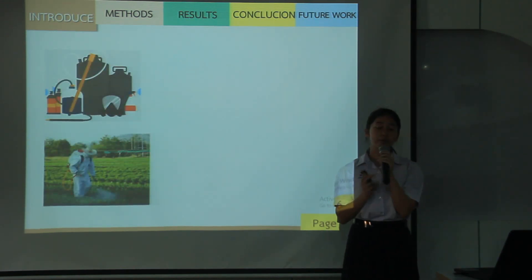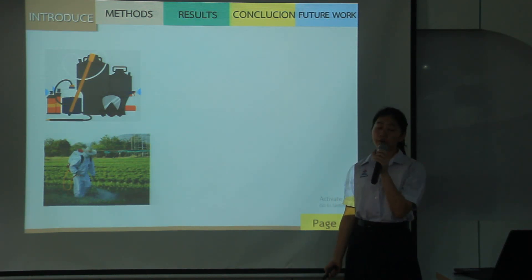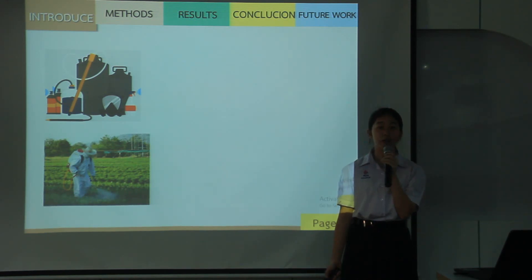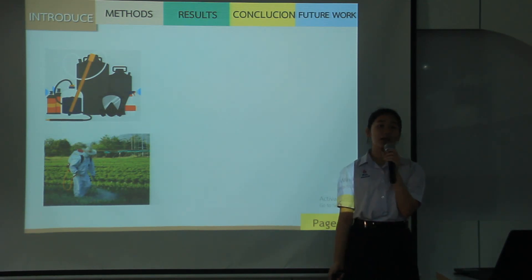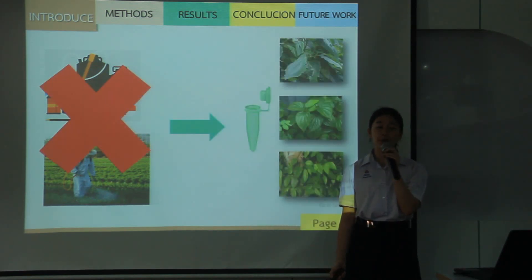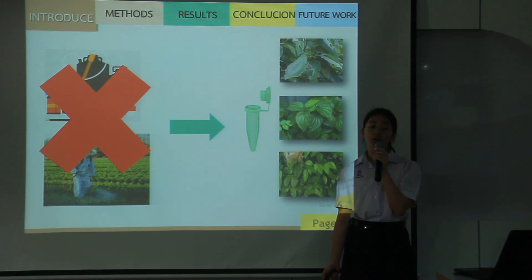From the problems mentioned above, farmers use chemicals to control the disease. However, chemicals leave residue on the cultivation area and on the products, which is harmful to consumers and creates problems for the environment. This motivated me to use Piper Rockcast plant to control disease instead of chemicals.